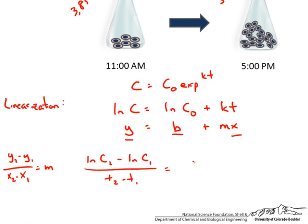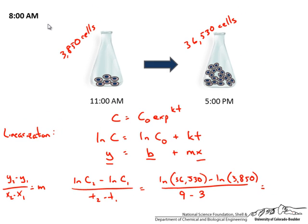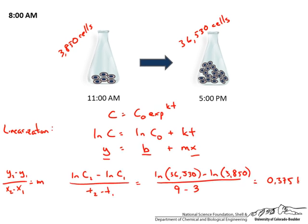So if we plug this in we are going to get the following. And we have the times of 9 and 3 hours based on our start time of 8 o'clock and the two time points that we collected. And this should yield a k of 0.375 hours to the minus 1. So that is the top part of that. Slope does not have units but the bottom part does. So now we have found our k.